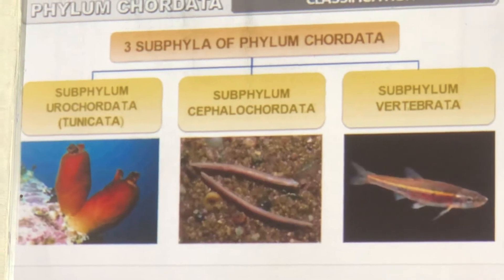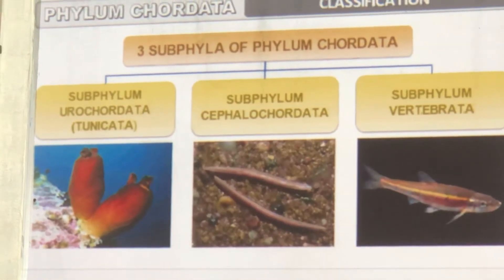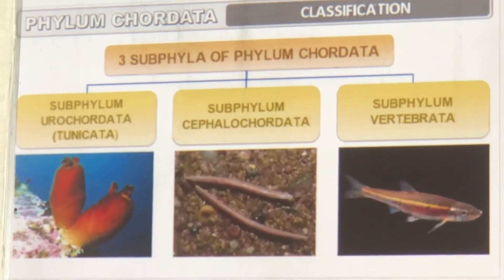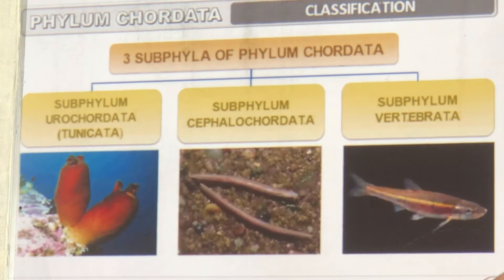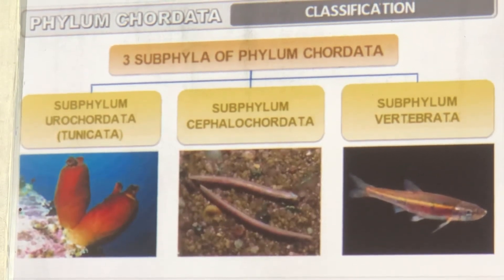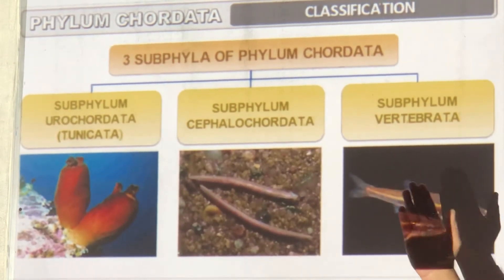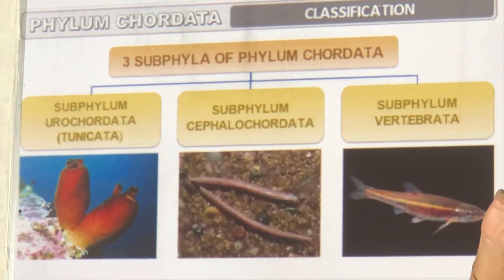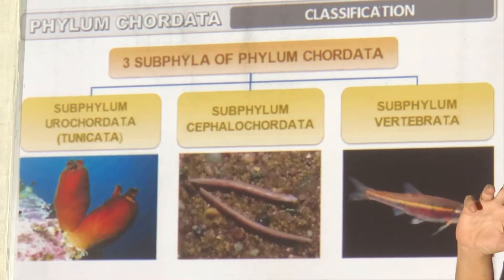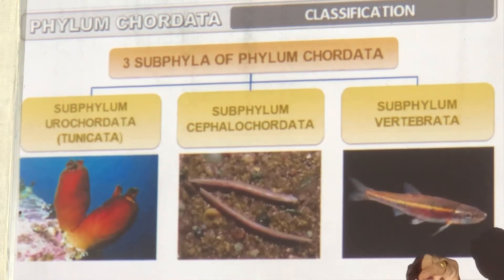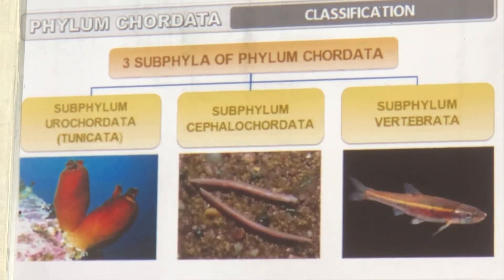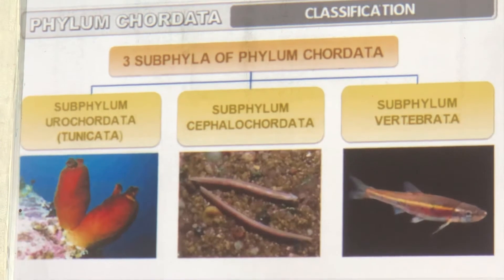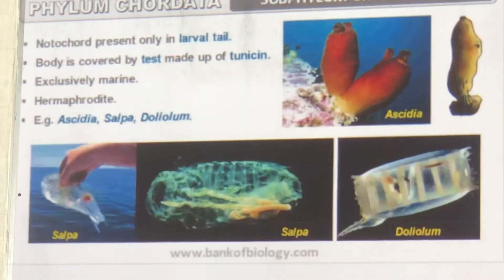Chordata is studied in three parts: Urochordata — tunicates, those who have a tunic or gown on top of them; Cephalochordata — 'cephalos' means head, so a head-like region is developed; and Vertebrata, which have a vertebral column.